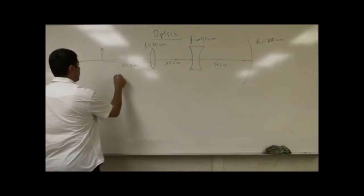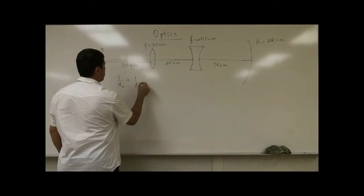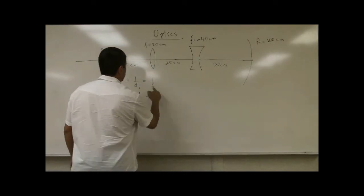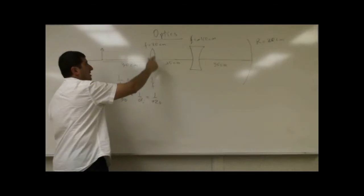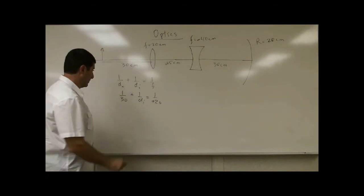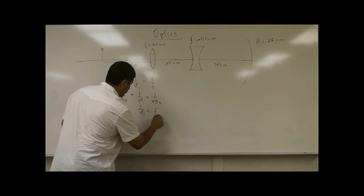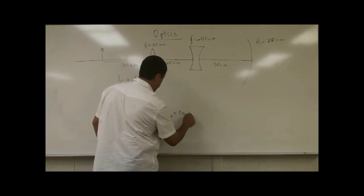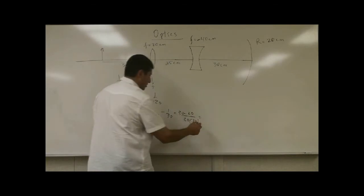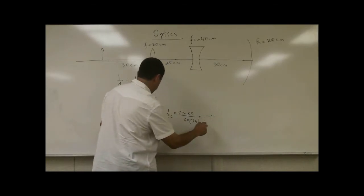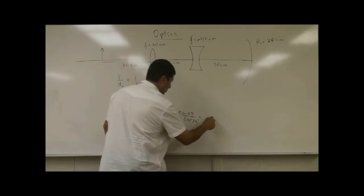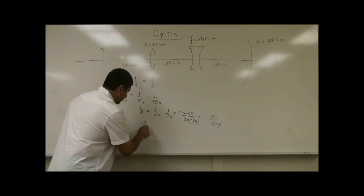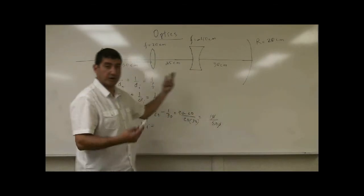Let's go step by step. 1/DO + 1/DI = 1/F. DO is 30, so 1/30 + 1/DI = 1/20. Since this is a converging lens, the focal length is positive. So 1/DI = 1/20 − 1/30. Cross-multiplying: (30 − 20)/(20 × 30) = 10/600. DI is the reciprocal, so DI = 60.